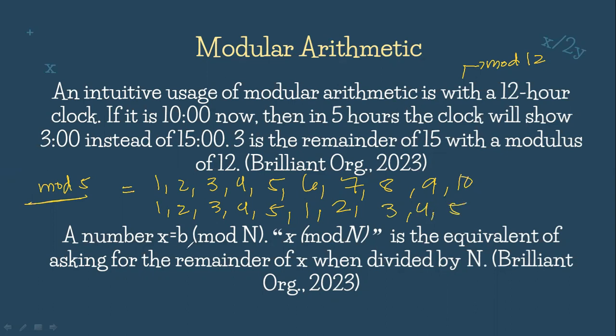A number x equals b mod N, and x mod N is equivalent to asking for the remainder of x when divided by N. So to further understand this concept, let's have other examples.